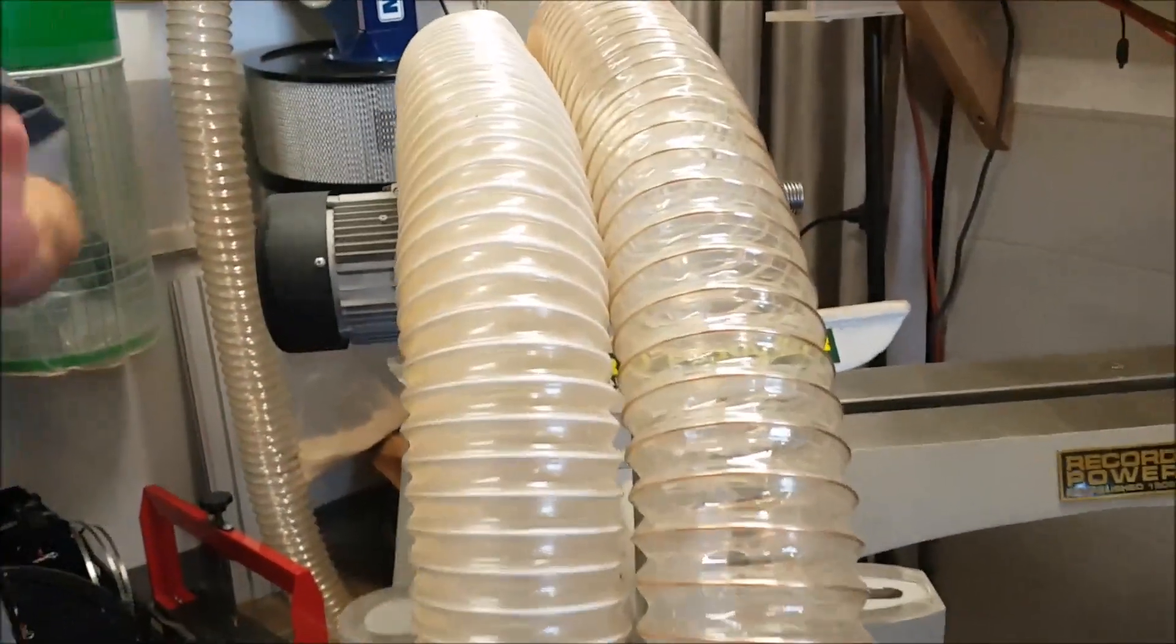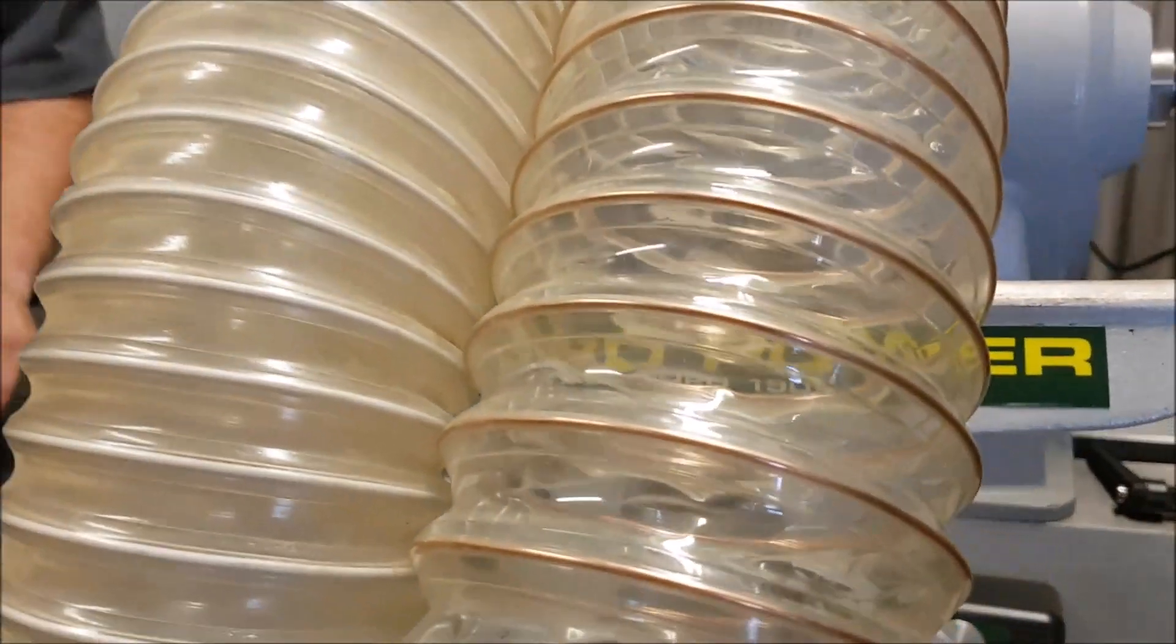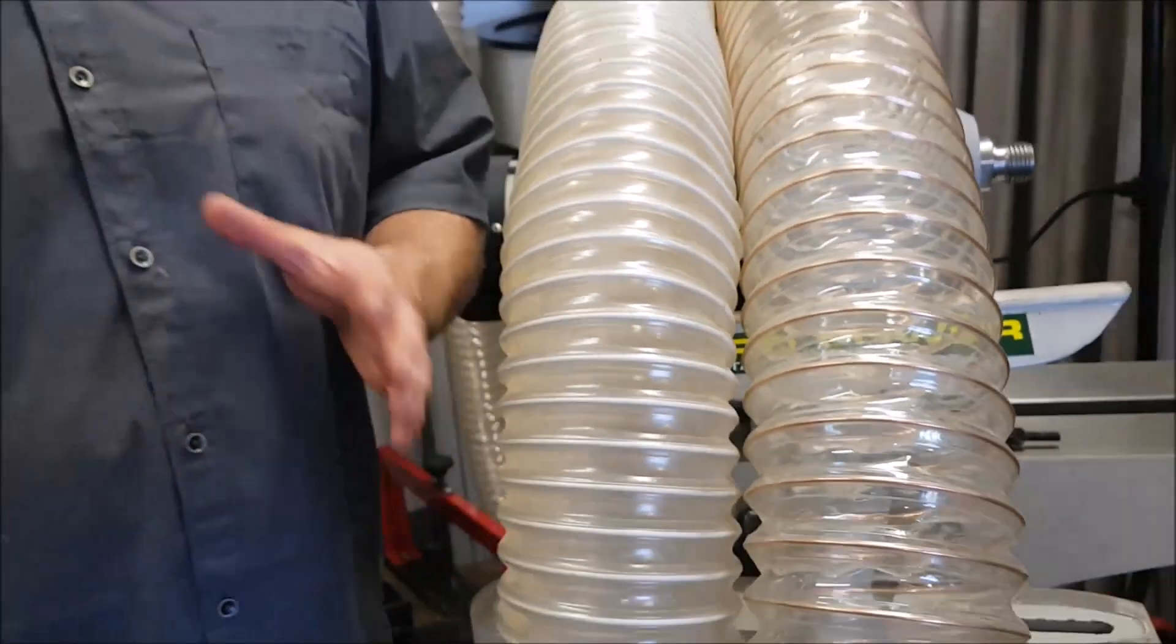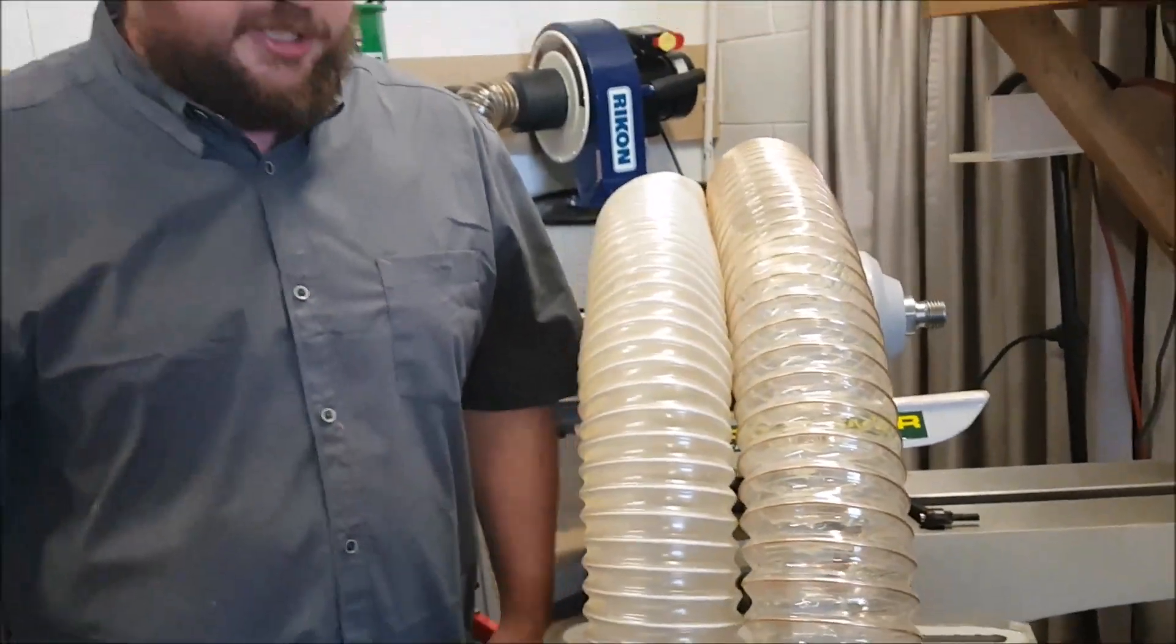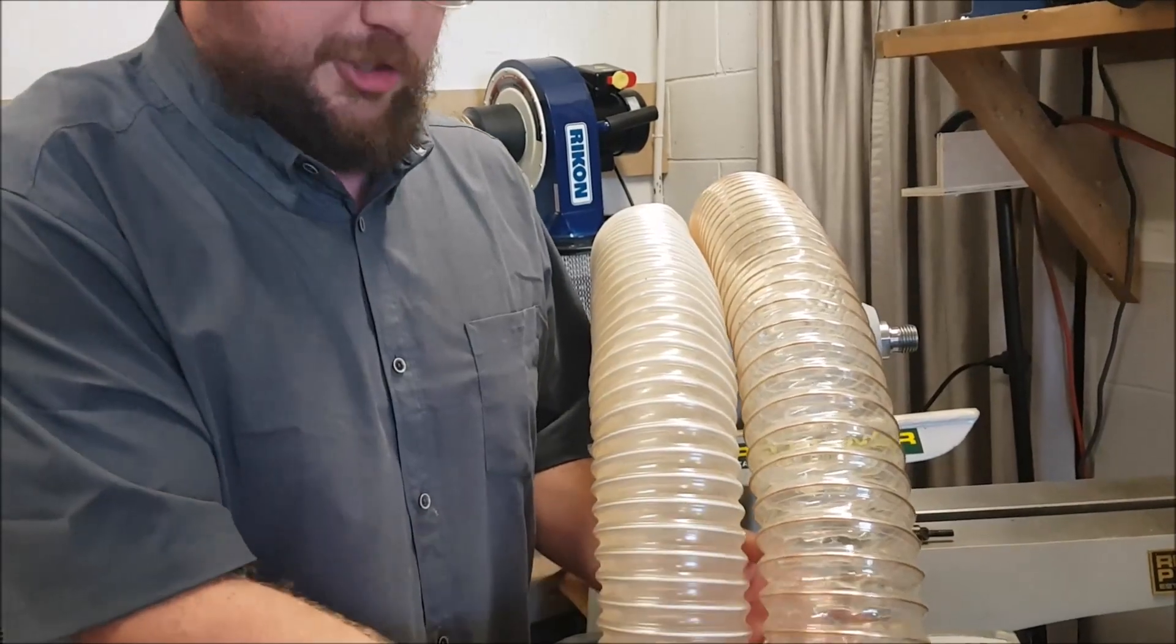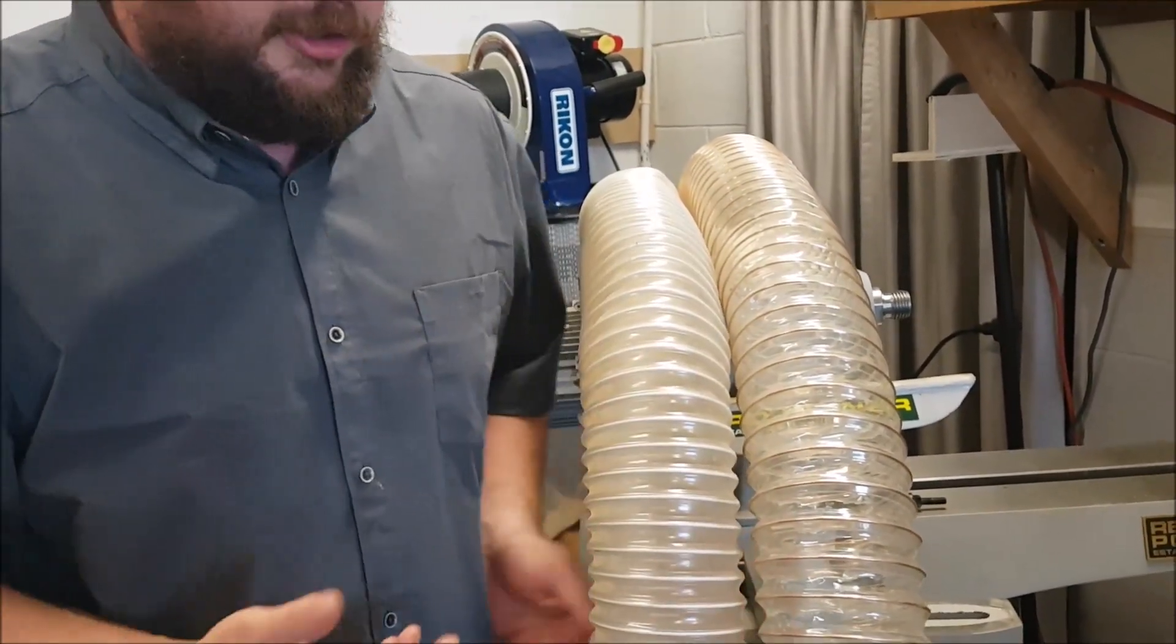So they both serve the same purpose. They're both for collecting sawdust and they're flexible, so they can be easily attached to any system. They are both transparent. The polyurethane is almost always more clear, so more transparent.